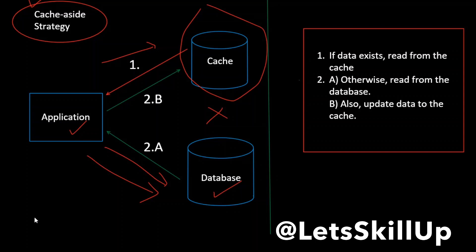Whenever data is requested for the first time it will result in a cache miss and then the data is loaded into the cache and subsequent reads will be faster. This strategy is useful for applications with read-heavy load. In this case data is being written directly to the database, therefore there is some period of inconsistency with the primary database.